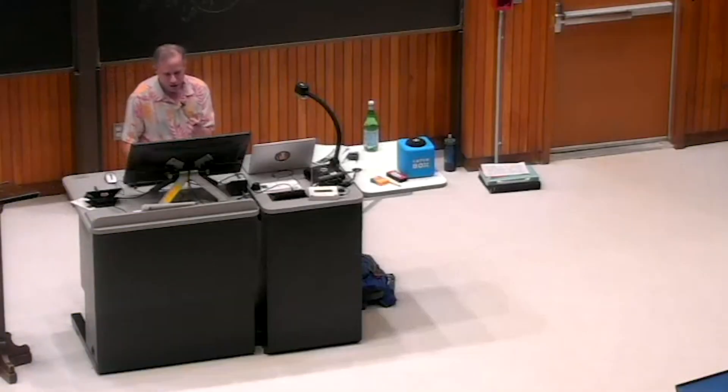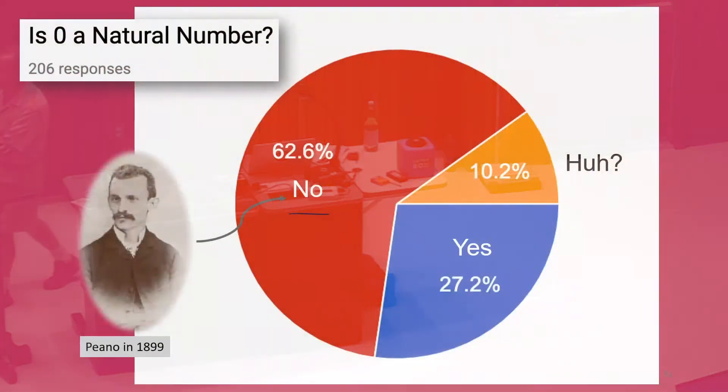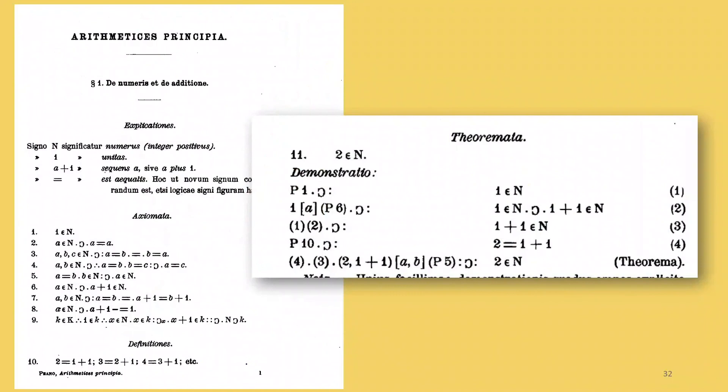And you can see that Peano was in the no crowd, right? He started from one, at least a notation that was one, at least in this first book about it. He actually changed his mind later in his writings. He started from zero. It's controversial. Okay. This is page one. There was like a presection of notation. By page two, he was already proving that two is a natural number.